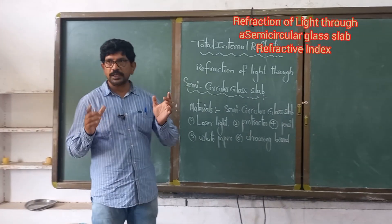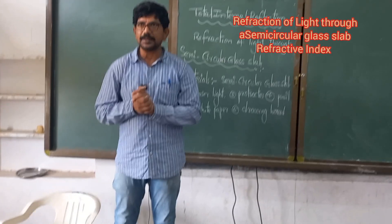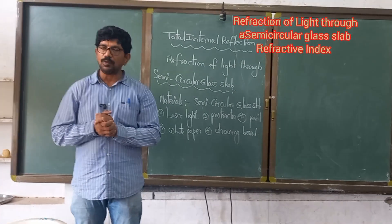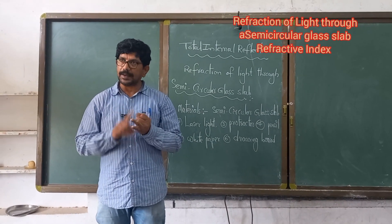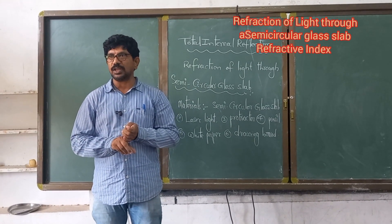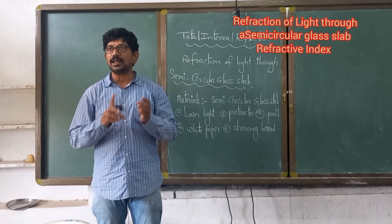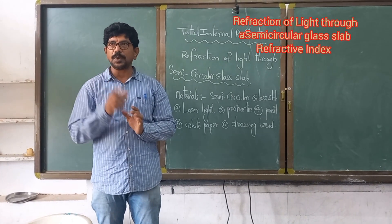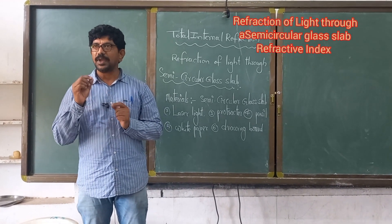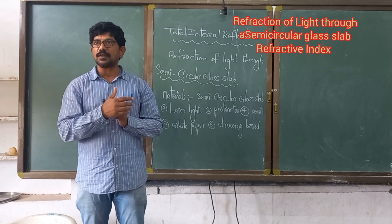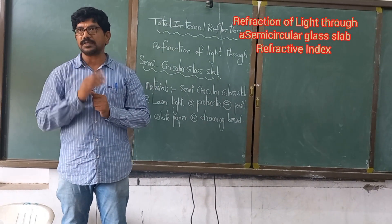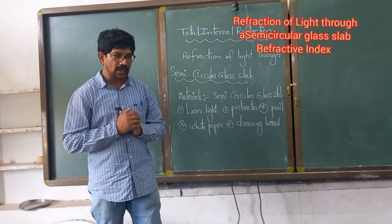Good afternoon children. Today in this class we are going to learn the refraction of light through the glass slab, and at the same time we are also going to find the critical angle and what is meant by total internal reflection — how total internal reflection is taking place. With one simple experiment we can find the refractive index of the semicircular glass slab.